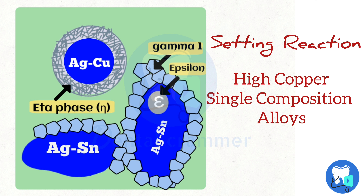In the final set matrix of single composition alloys, the gamma phase is present as a filler in the matrix and epsilon phase is present within the gamma phase. Notably, gamma 2 phase is not formed in single composition alloys.